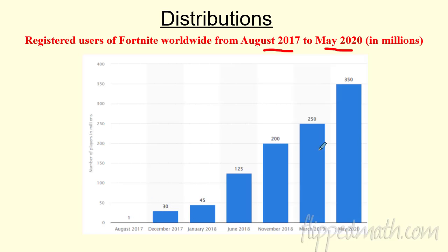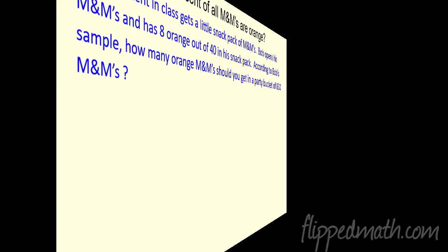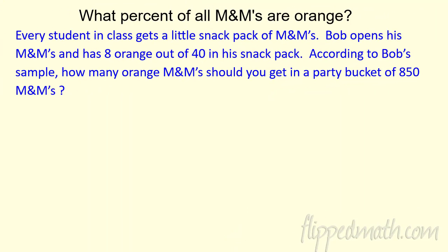We went from 1 million in August of 2017 to 350 million in May. That's pretty amazing — probably because of those cool skins, some cool dances. So we're going to look at how the data is distributed maybe over time, or just other ways to see how the data falls.